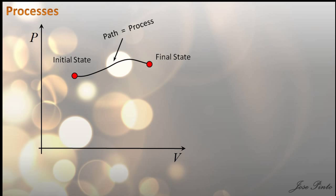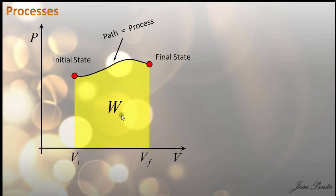A thermodynamic process is basically the path through the space of thermodynamic variables that takes the system from one state to another state. This space of thermodynamic variables is called a PV diagram — it's just pressure versus volume. So a thermodynamic process is the path from state one to state two, and the area under the curve is the work done by the system. In order to calculate work, we need to know the path it takes, so work is not a state function.